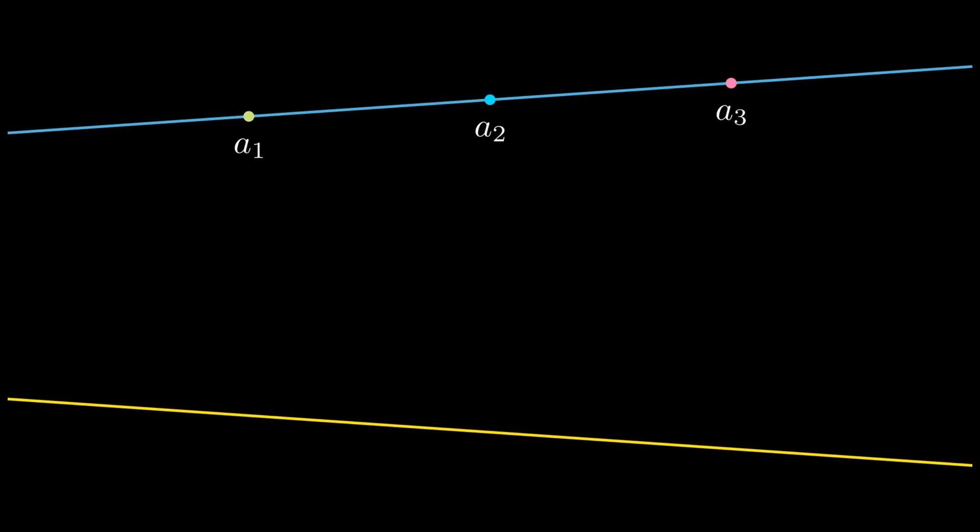Do you see the blue line and the yellow line? We've taken three points in each of those lines. In the blue line we have a1, a2, a3, and in the yellow line we have b1, b2, b3.